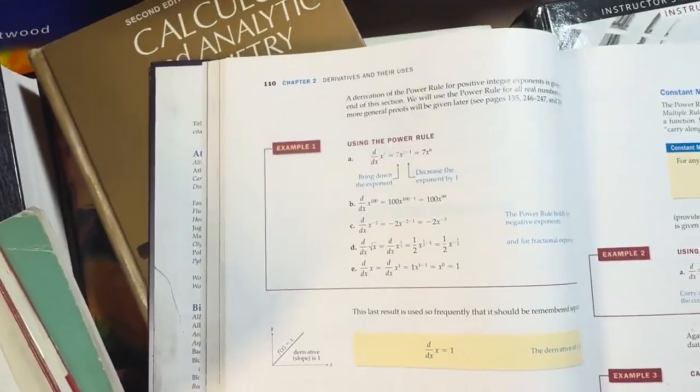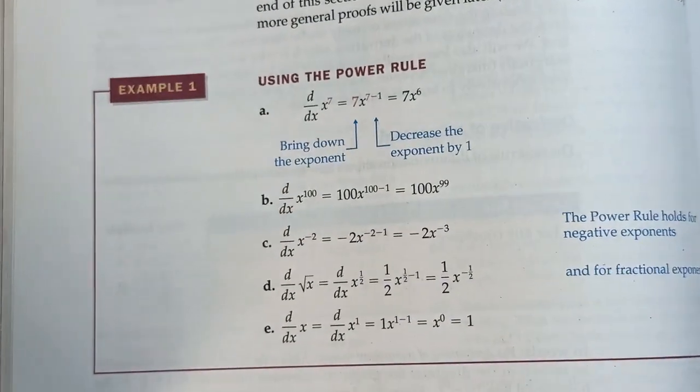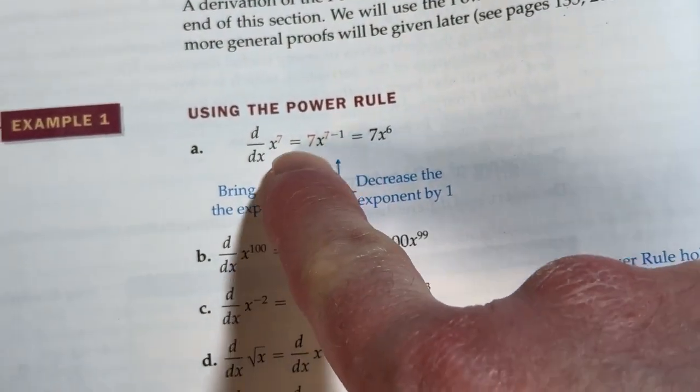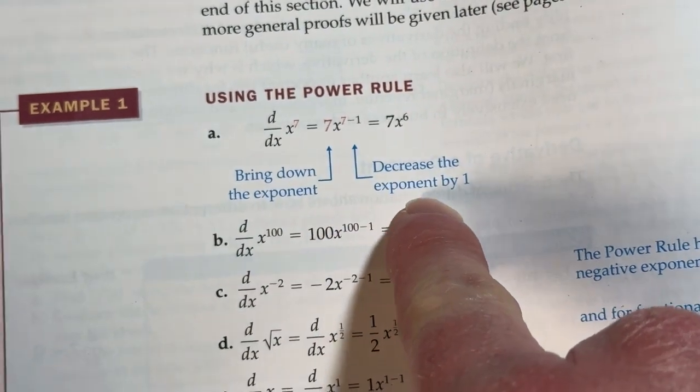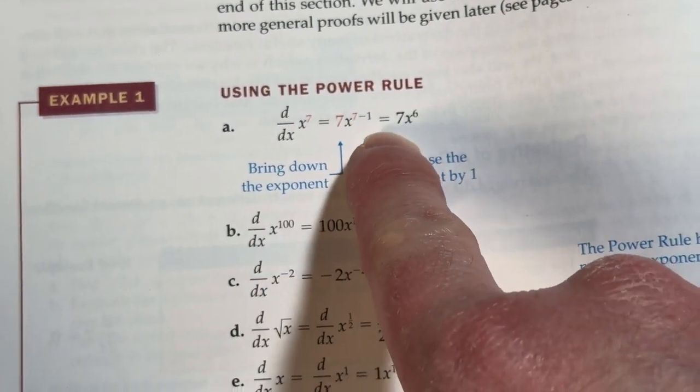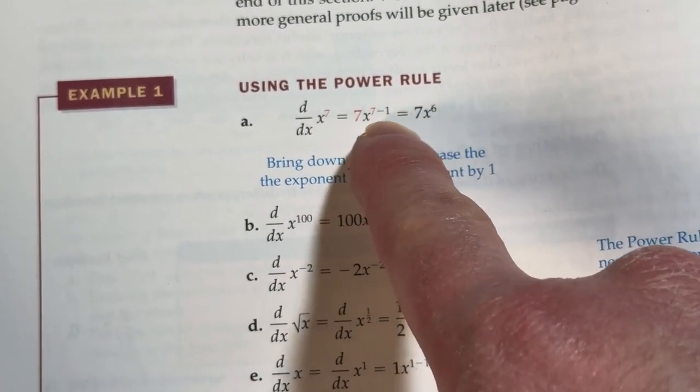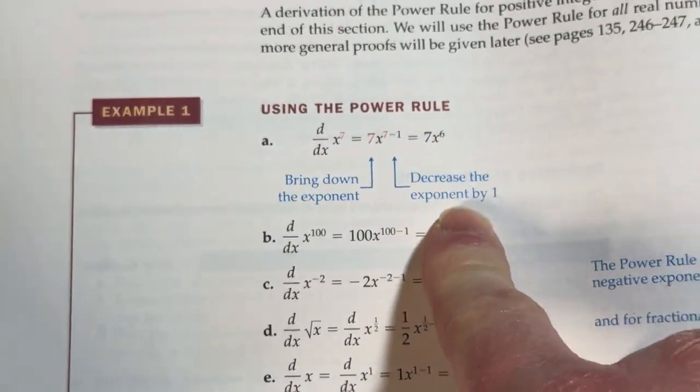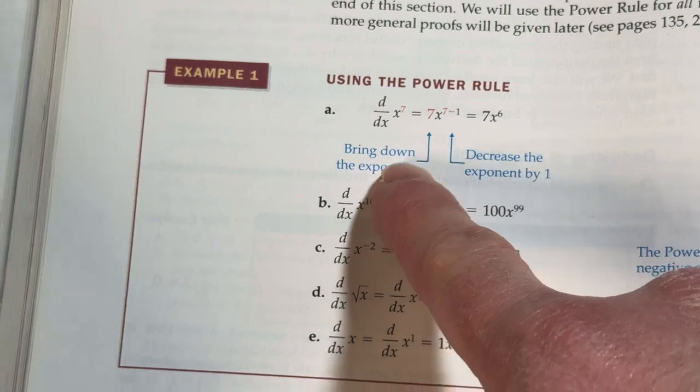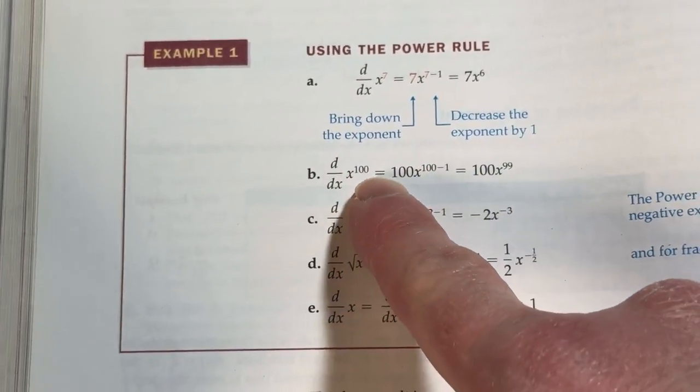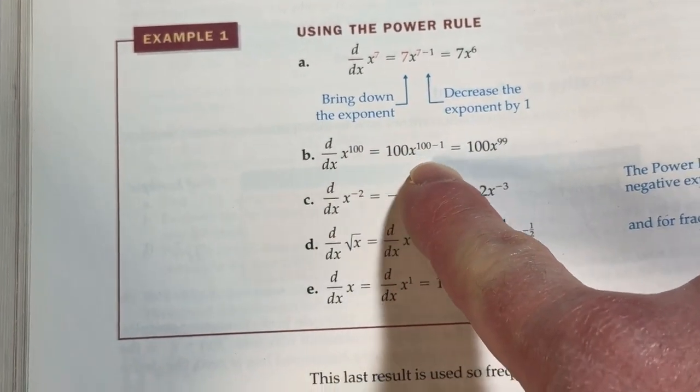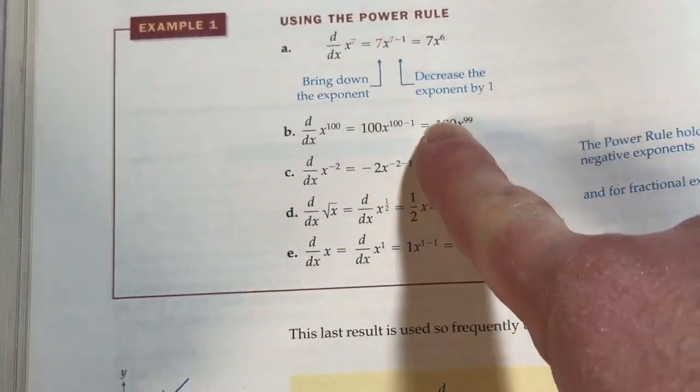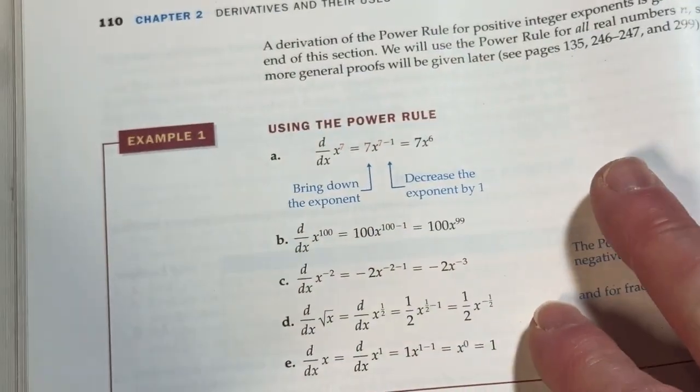Here's an example. Look, using the power rule. You see how they show you every step. You bring down the exponent. You see that? Then you decrease the exponent by one. That's the power rule. So if it was x to the fourth, it'd be 4x cubed. You bring down the 4, subtract one. And then here's another example with 100. That's called the power rule. Now you know how to find derivatives. So now you know calculus. It's a really good book.